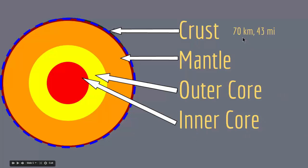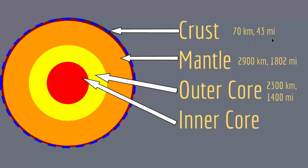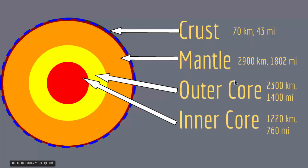The crust is about 70 kilometers thick, which is equivalent to 43 miles. The mantle is about 2,900 kilometers thick, the outer core is about 2,300 kilometers thick, and the inner core is about 1,220 kilometers thick. These layers are defined by either their chemical or their rheological properties. Rheology means the study of flowing, so these layers are composed of different materials that flow differently, and based on that the Earth is divided into these layers.